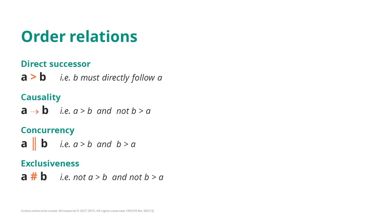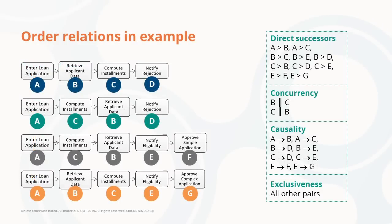Now that we have got to know these relationships, we can identify them in the example that we have seen. Here again, you see the traces that we have described for the example. And you see listed the direct successor relationships that we have identified from them.